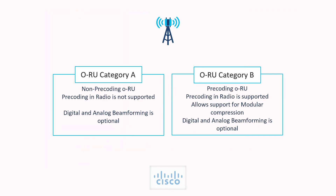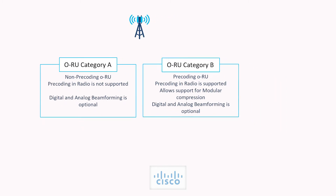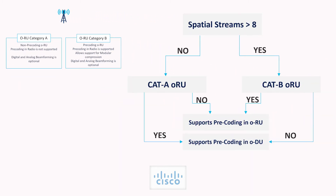There are two kinds of ORU designed for this implementation: Category A and Category B. CAT-A ORUs don't have the pre-coding function, which means it is mandatory for the ODU to perform this function and support up to 8 pre-coded streams. CAT-B ORUs have support for the pre-coding function and are implemented in scenarios where greater than 8 spatial streams need to be processed in the radio.